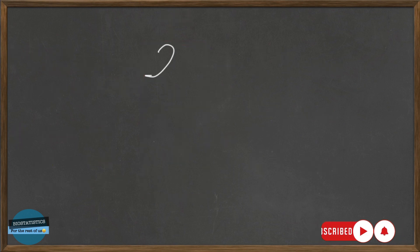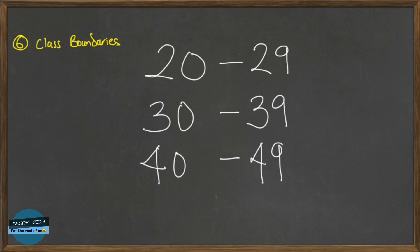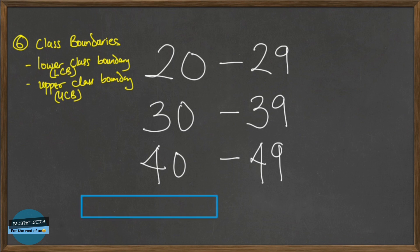The next terminology we'll be talking about is called the class boundaries. For the class boundaries, we have the lower class boundary and the upper class boundary. I'll be using a simple analogy to explain the class boundaries. Imagine this is the class 20 to 29, and this is the class 30 to 39. You can see that there's a space between these classes. So what if somebody falls within the space of 29 to 30? What happens? Where do we put that person? Do we put that person in the 20 to 29 group or the 30 to 39 group?